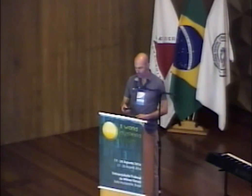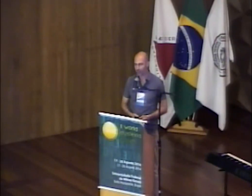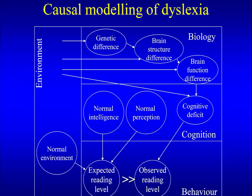We distinguished different levels of explanation. At the bottom you can see the behavioral level, which is the level at which we describe the symptoms of dyslexia and at which dyslexia is defined in international classifications. The main aspect of the definition is that the child has a reading level far below what is expected. So that's the definition. The goal is then to try and understand the cause of the symptoms, and you can describe causes at many different levels.